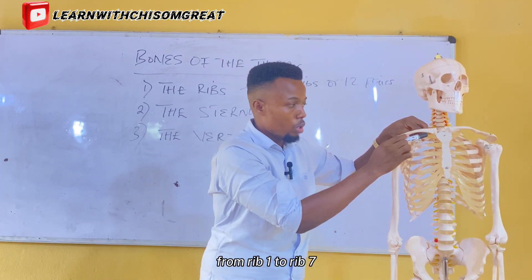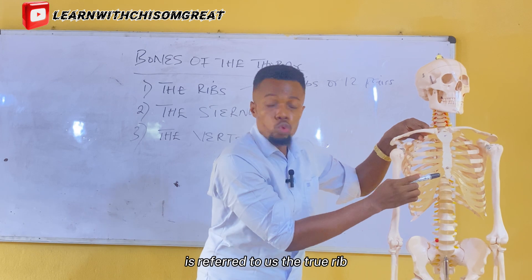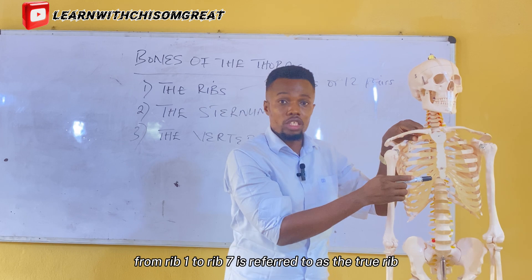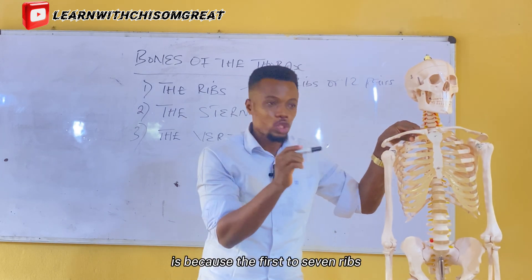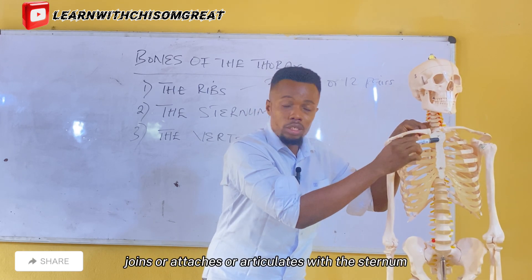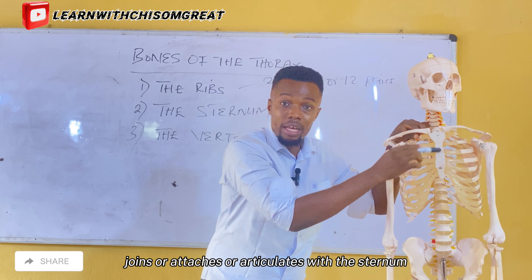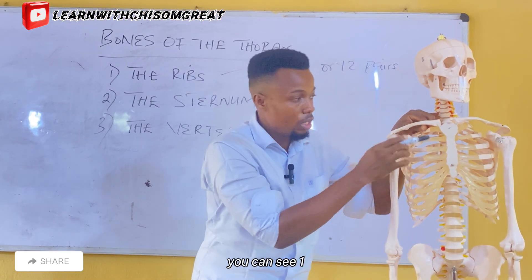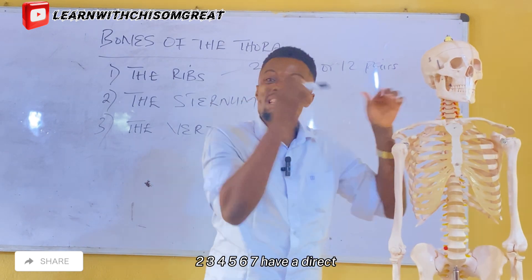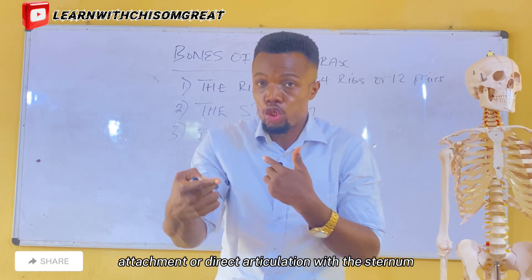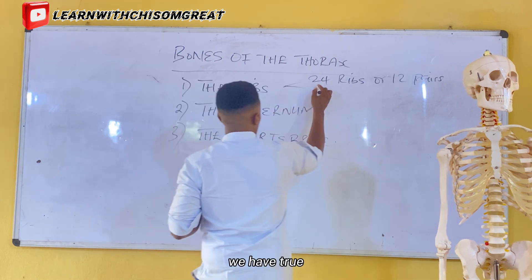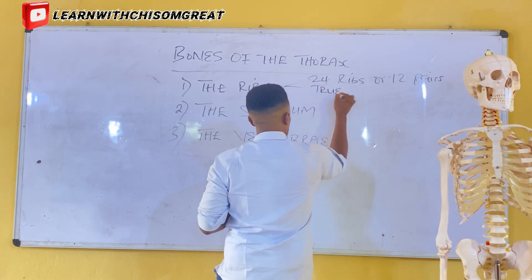From rib 1 to rib 7 is referred to as the true rib. The reason is because the 1st to 7th rib joins, attaches, or articulates directly with the sternum. Because they have a direct attachment or direct articulation with the sternum, they are called the true ribs.